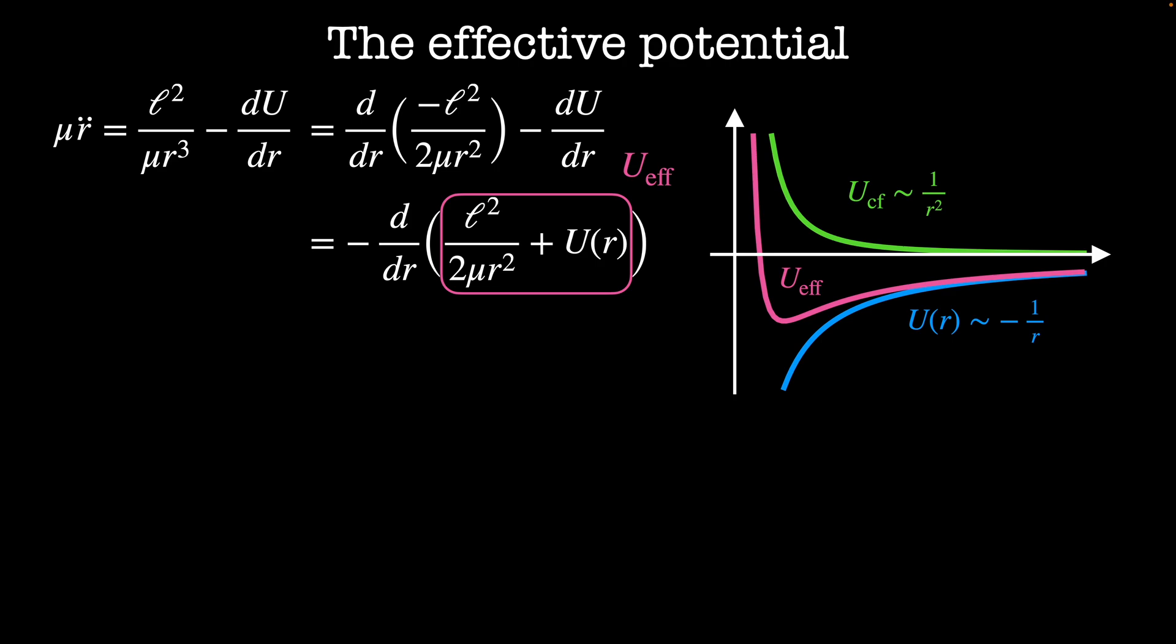Before we move on with this analogy, we'd like to double check that energy is still conserved in this new coordinate system. Starting with the equation of motion, μ r double dot equals minus d by dr of our effective potential. I'm going to multiply both sides by r dot and then integrate this over time.